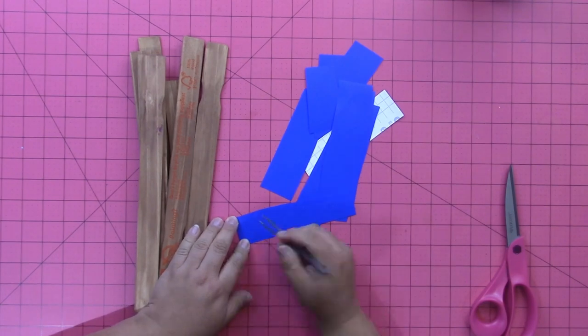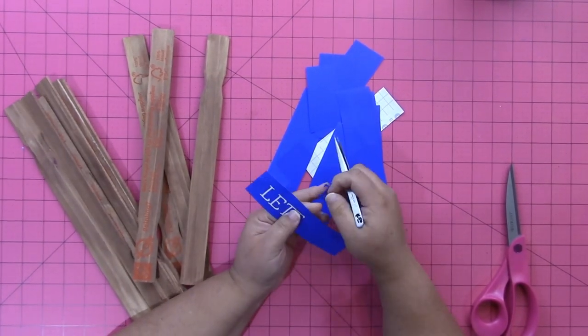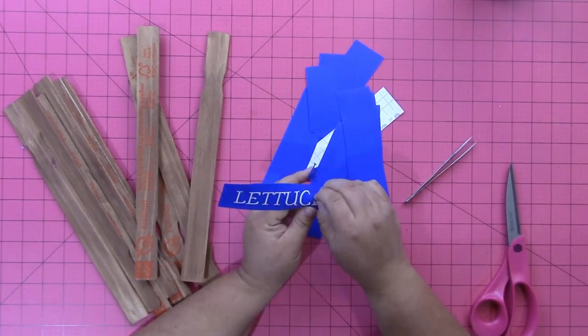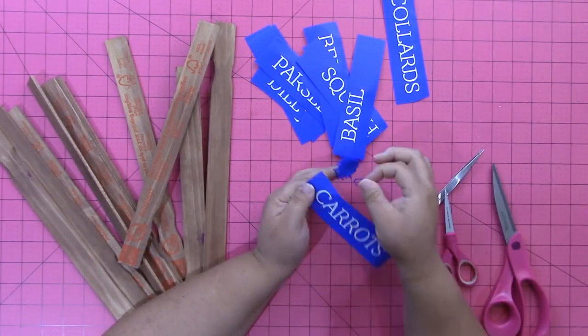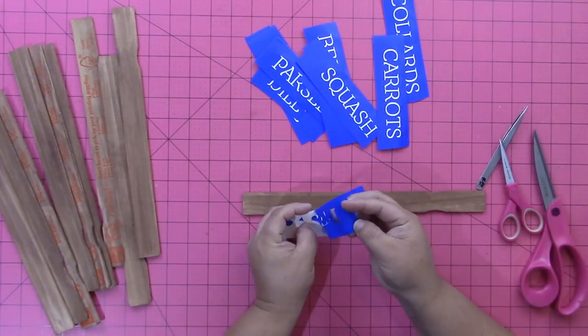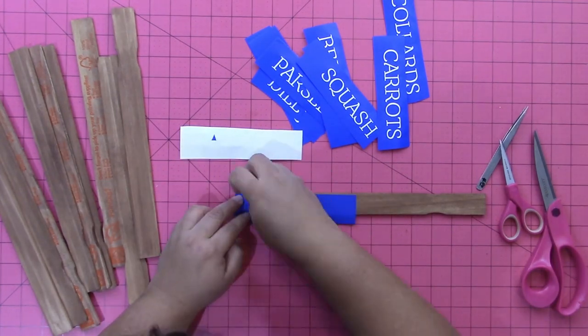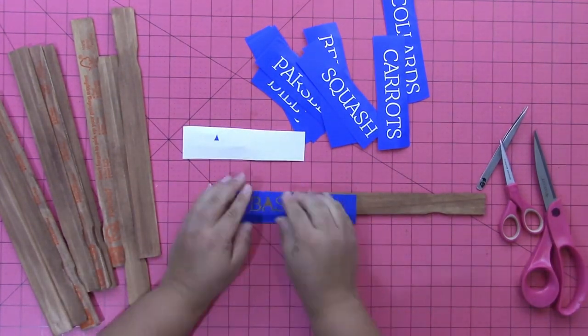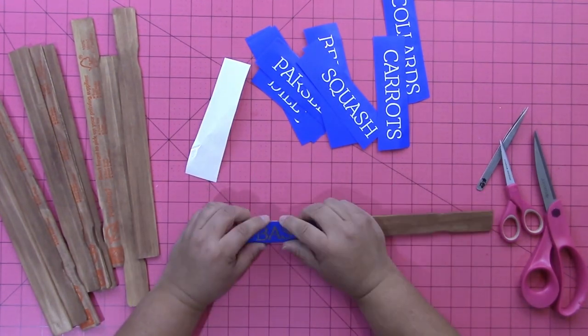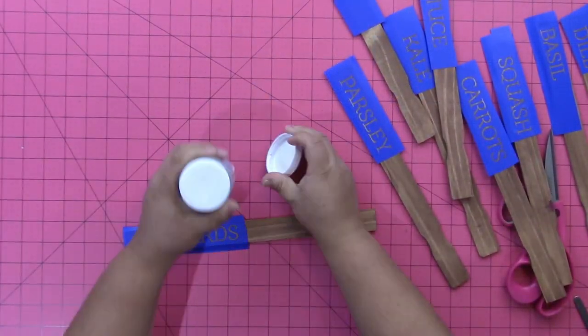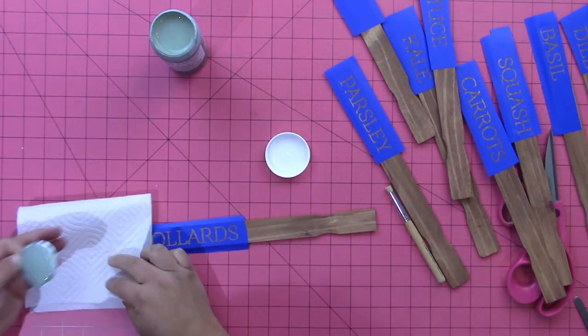I used some scissors to cut apart all of the words on the vinyl, and then I used some tweezers to weed out the letters. Weeding is where you pull out the parts of the vinyl that you don't want so that it just leaves the stencil. Then I peeled this stencil off and put it with the little tiny pieces that go in the middles of the letters onto my plant stake. This was just something that I eyeballed, so you can be more exact if you want, but it came out pretty good.